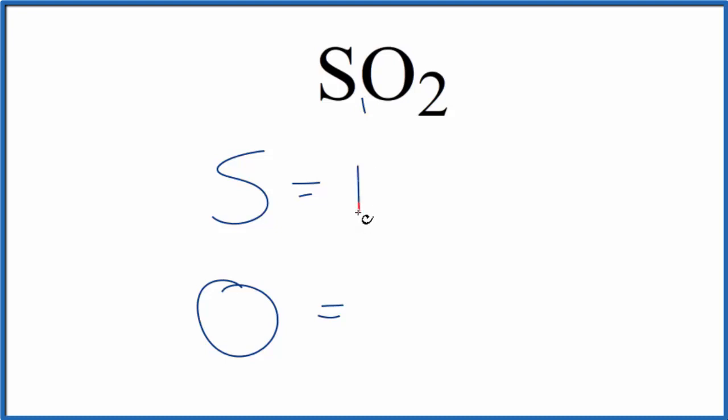So we have one atom of S, of sulfur, in sulfur dioxide. Likewise oxygen, we have the subscript of two so we have two oxygen atoms.